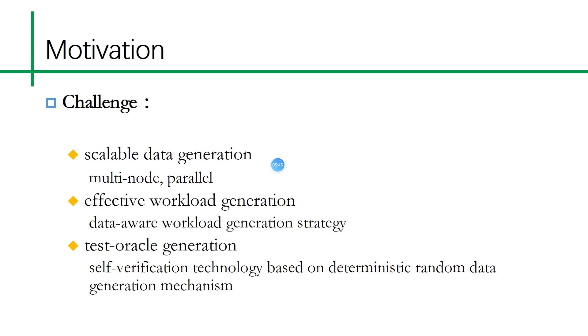In our work, we mainly face three challenges. The first challenge is scalable data generation. Other tools that can perform self-verification cannot generate large scale databases. We need to support correctness verification and large data sets. In order to be able to perform self-verification, we use this deterministic random data generation mechanism. In order to ensure efficient data generation, we adopt a multi-node parallel data generation method.